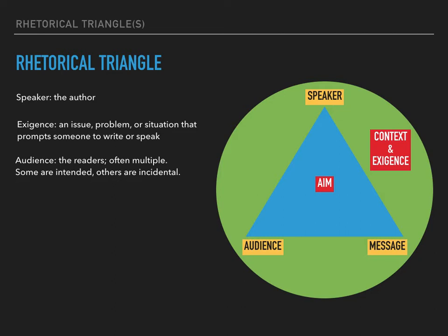The third corner of the rhetorical triangle is the message. This is where we might put the specific position of the author or their thesis. However, just as we talked about when we discussed Harris and coming to terms, the position of the author might not be the same thing as the aim.